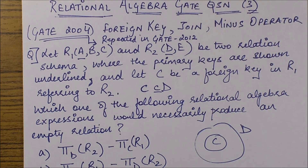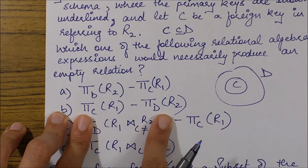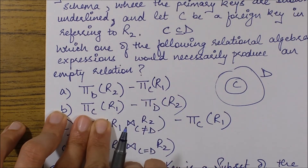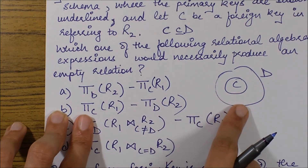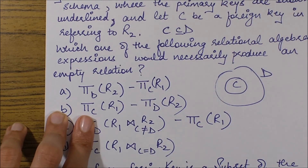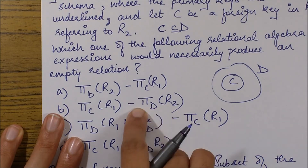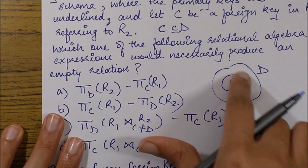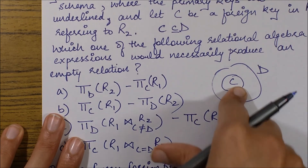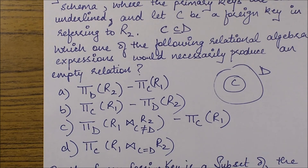When we write C minus D, it means we are subtracting all records common to C and D from C. Since C only contains common records (being a subset of D), subtracting all common entries from the smaller set C leaves us with an empty set. So the answer is straightforwardly option B.